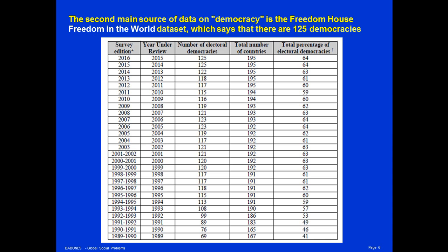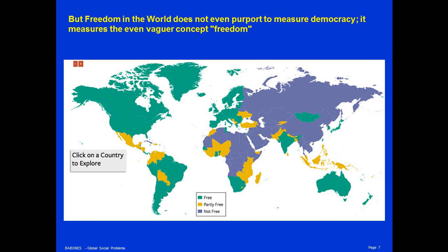The number of electoral democracies is not primarily what Freedom House measures. Freedom House primarily measures the vaguer concept of freedom. It does not give a numerical score for democracy; electoral democracy is merely one of the ingredients that goes into its numerical freedom score. It characterizes the countries of the world as either free, partly free, or not free. And as you can see at a glance, most of the countries that are free are also the countries that are rated as democracies by the Polity4 dataset.